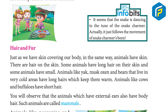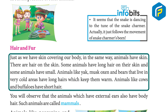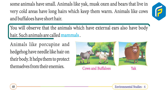Just as humans have skin covering their body, animals also have skin with hair on it. Animals like yak, musk oxen, and bears that live in very cold areas have long hair which keeps them warm. Animals like cows and buffaloes have short hair. Animals that have external ears also have body hair — such animals are called mammals.